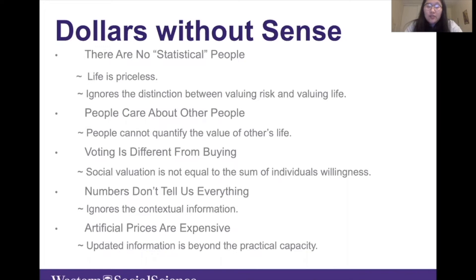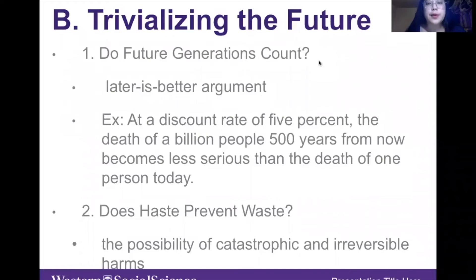Finally, the economic valuation required by cost-benefit analysis is fundamentally flawed because it demands an enormous volume of consistently updated information, which is beyond the practical capacity of our society to generate. The most important reason for implementing environmental protection is to protect future generations, not just the current one — including avoiding the extinction of endangered species, maintaining the normal function of ecosystems, and reducing persistent chemicals. Cost-benefit analysis downgrades the importance of the future through the technique of discounting, through predictive methodologies, and by taking inadequate account of the possibilities of catastrophic and irreversible events.